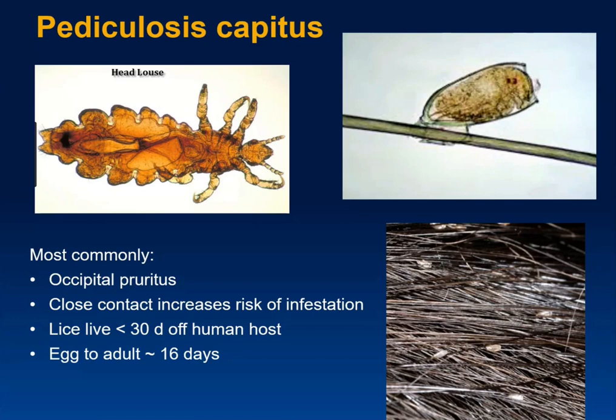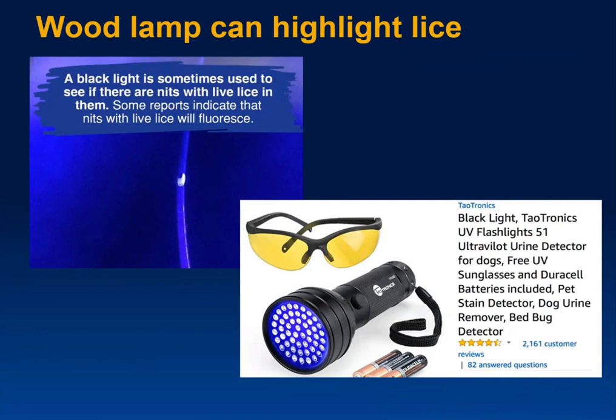Dermatologists use a Wood's lamp to look at bacterial infections, and they also use it to identify nits on a hair shaft. Dr. Ehler found a good black light on Amazon that can be used if you have a case you're not sure about — and it doubles as a urine detector for dogs.